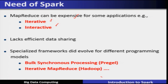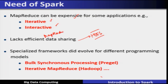MapReduce also lacks efficient data sharing across the map and reduce phases of operation or iterations. The data in intermediate form is stored in the HDFS file system, hence it is not shared in an efficient manner. Sharing data across the MapReduce phase has to go through the disk, which is a slow operation — not an efficient one. Hence this statement: MapReduce lacks efficient data sharing.